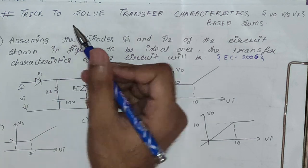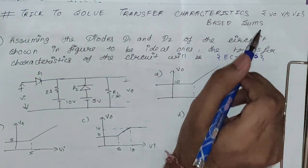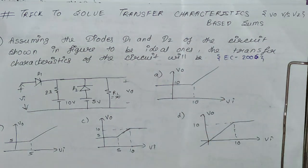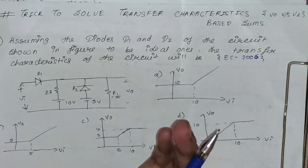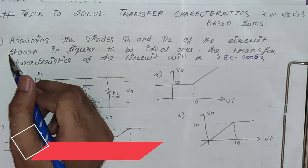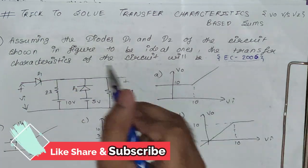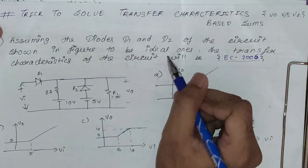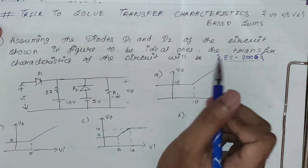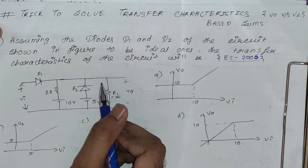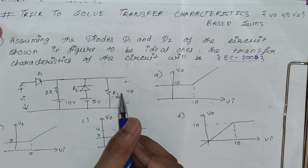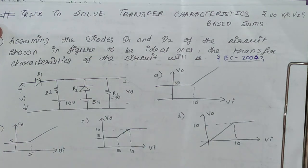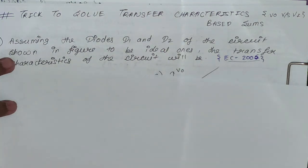Hello friends, today we are going to see the trick to solve transfer characteristics based sums — basically the sums where we have to find Vo versus Vi. So let's jump directly to the sum, and there only we will see the trick. The first sum is from EC 2006: assuming the diodes D1 and D2 of the circuit shown in the figure to be ideal ones, the transfer characteristics of the circuit will be. So first take a look at how I solve this sum, and then I will show you the trick.